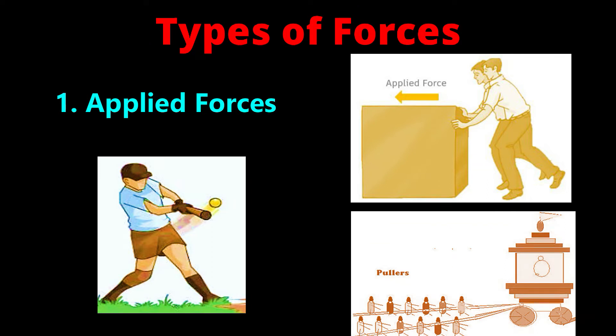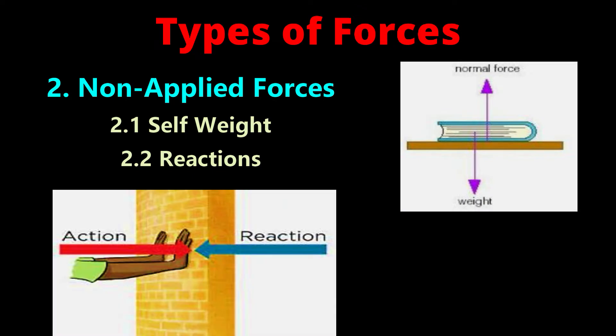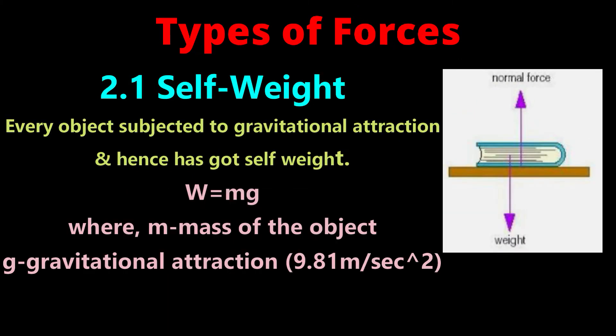Next, non-applied forces. There are two types of non-applied forces: self-weight and reactions. Self-weight: each and every object is subjected to gravitational attraction and hence has got self-weight which is given by w equals mg, where m is mass of body or object, g is gravitational attraction that is 9.81 meter per second square. Self-weight always acts in vertically downward direction only.